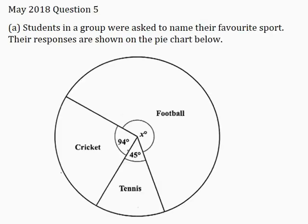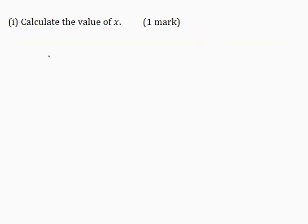Now if we carefully observe our pie chart here, we know that the angle around the point is 360 degrees and there are three angles in the sectors here that make up the pie chart: X, 94 degrees, and 45 degrees. So we can write here that X plus 94 degrees plus 45 degrees is equal to 360 degrees.